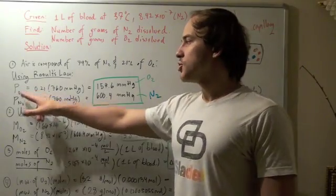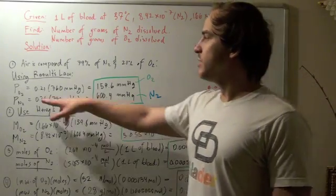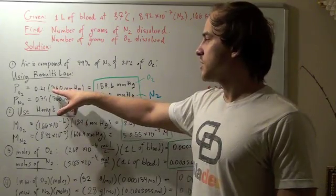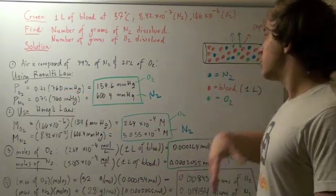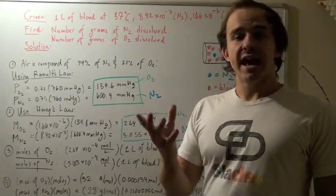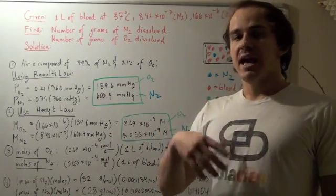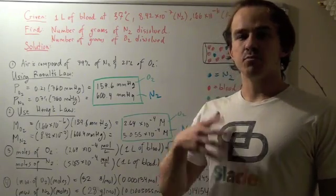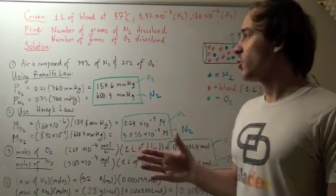Now we can find the partial pressures of each gas by using the formula. Before we use the formula, let's realize why we're using 760 mmHg. The total pressure above our system is the air that we're breathing in, which is at atmospheric pressure. Atmospheric pressure is 1 atm or 760 millimeters of mercury.